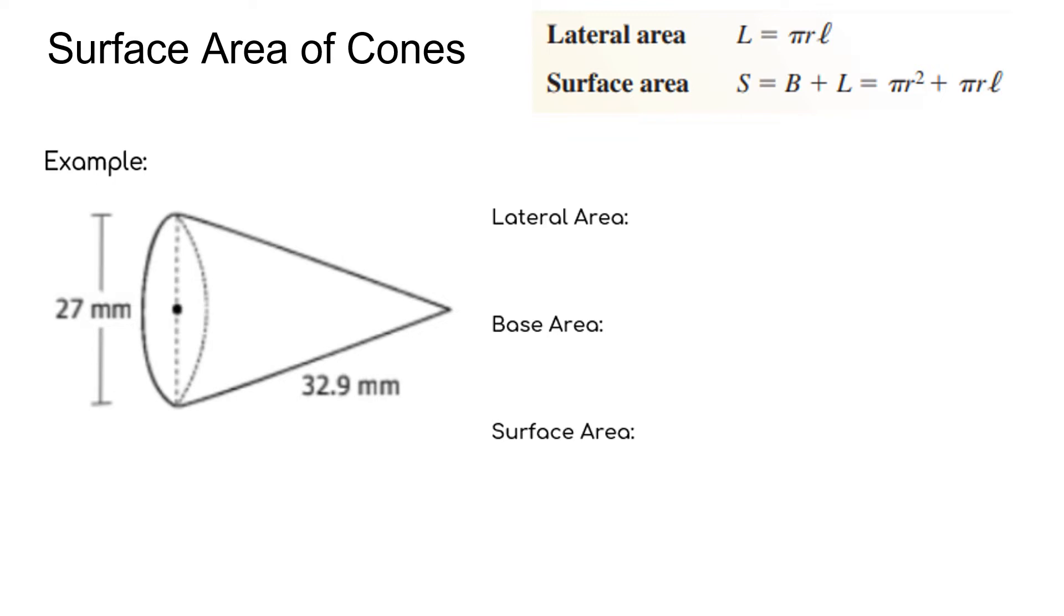To find the lateral area, we're just going to use this formula π times the radius times the slant height. We're given the slant height in this case. There are going to be some instances where you might be given the interior height and you're going to have to solve for the slant height.